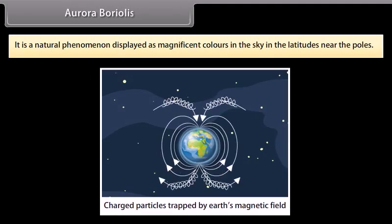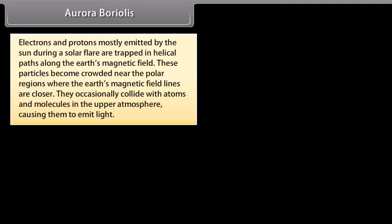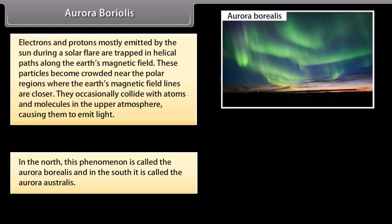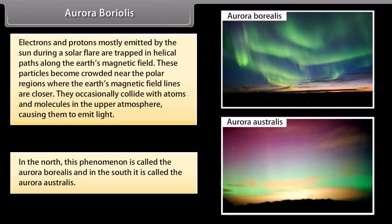Aurora Borealis: It is a natural phenomenon displayed as magnificent colors in the sky in the latitudes near the poles. Electrons and protons mostly emitted by the sun during a solar flare are trapped in helical paths along the earth's magnetic field. These particles become crowded near the polar regions where the earth's magnetic field lines are closer, and they occasionally collide with atoms and molecules in the upper atmosphere causing them to emit light. In the north, this phenomenon is called the Aurora Borealis, and in the south, it is called the Aurora Australis.